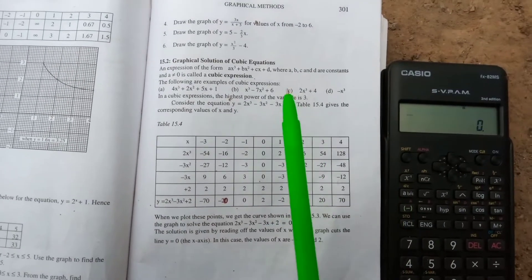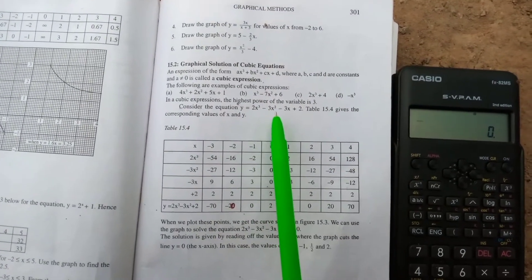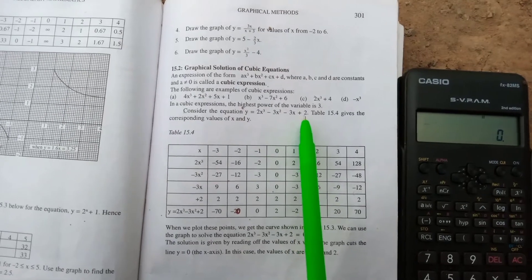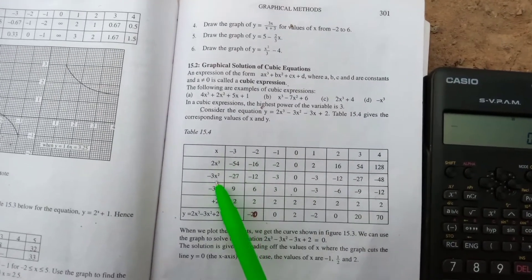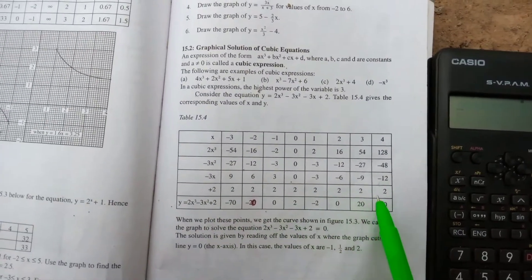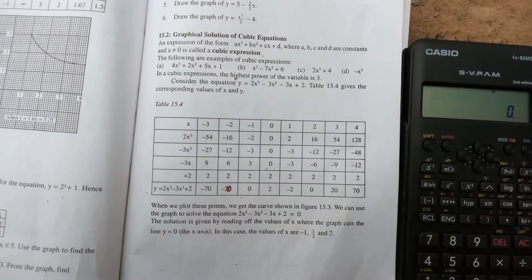Consider the equation y equals 2x cubed minus 3x squared minus 3x plus 2. These are the already filled tables but we want to do that using our calculator fx-570MS.